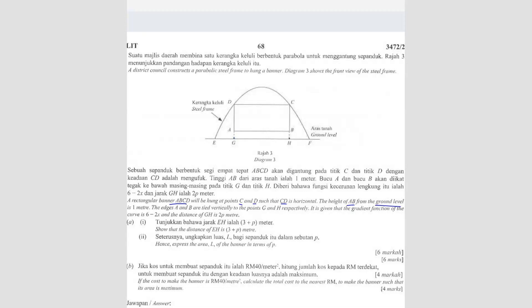Let me just write 1 meter. The edge of AB are tied vertically to the point G and H respectively. It is given that the gradient function of the curve is 6 minus 2x. So they say gradient function, gradient function means dy/dx. So dy/dx equals to 6 minus 2x. The distance of GH is 2p. So this distance here, GH is 2p. Show that the distance EH is 3 plus p meter. So they're asking for distance of EH. So EH is here to here. So what can we do with this?